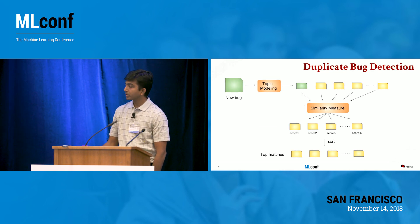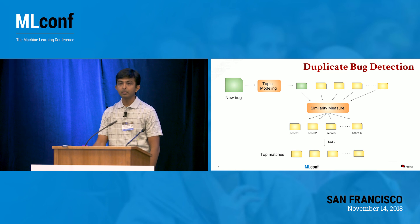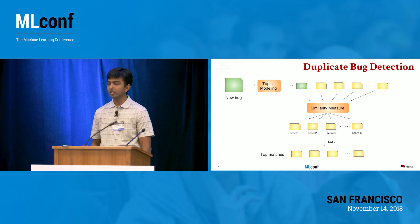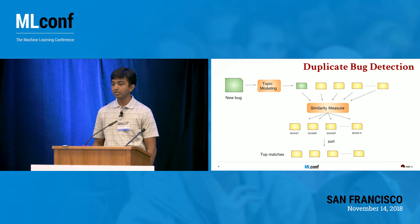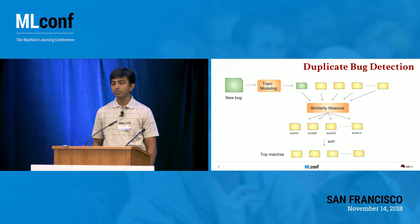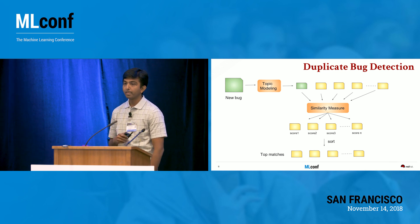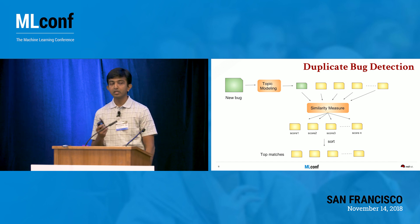When a new report comes in, you do the same topic modeling on the new bug. Now you have a set of topics related to the bug, which you push through a similarity measure engine — a lexical distance measuring engine — and it outputs scores showing how much each existing bug differs from the new bug being entered. Once sorted, you get a top match of bugs that closely resemble the one currently being entered.